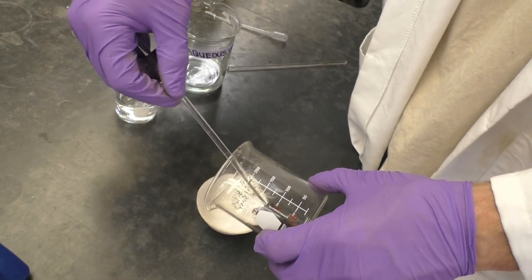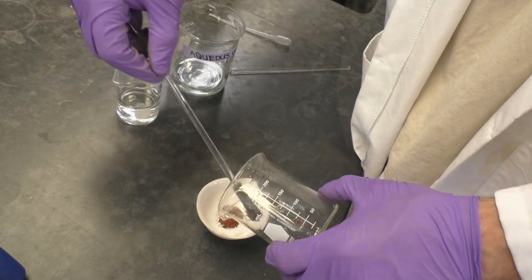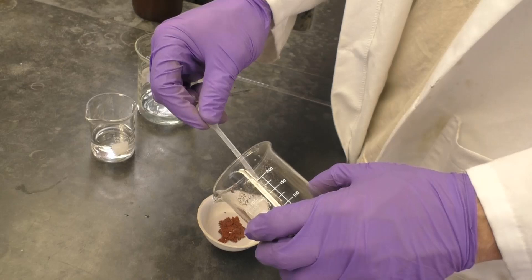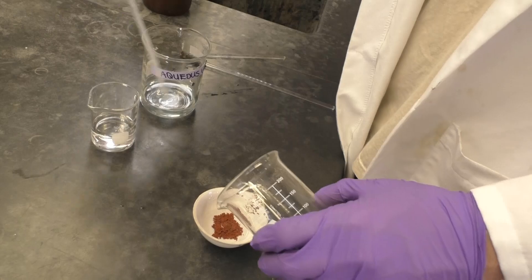Now transfer the copper to your evaporating dish using a rubber policeman. We want all the copper to end up in the dish, so feel free to use water to rinse out your beaker and help transfer all the solid and to rinse off your rubber policeman.